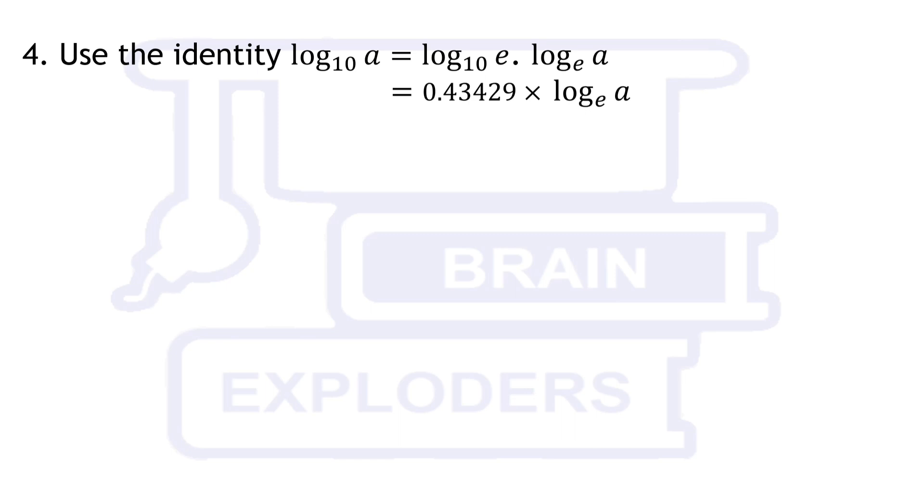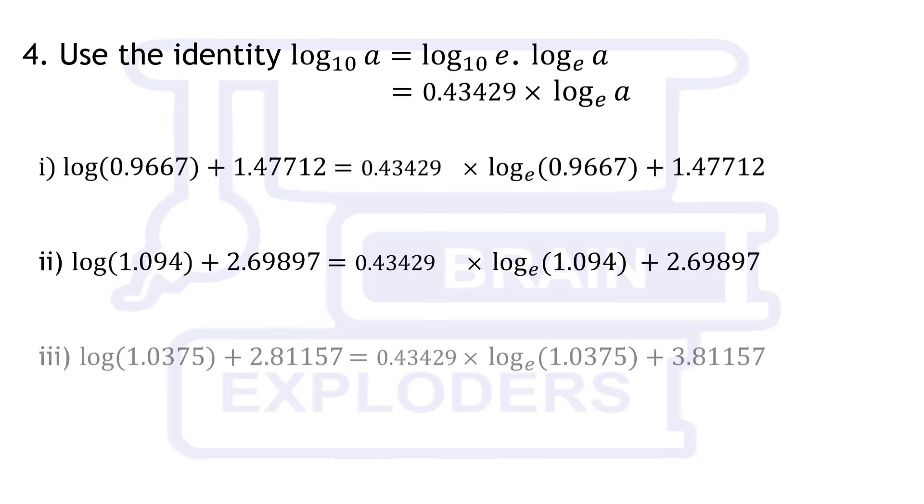Value of log e is 0.43429, hence log of 0.9667, 1.094, and 1.0375 can be written as 0.43429 times of log of 0.9667, 1.094, and 1.0375 respectively.